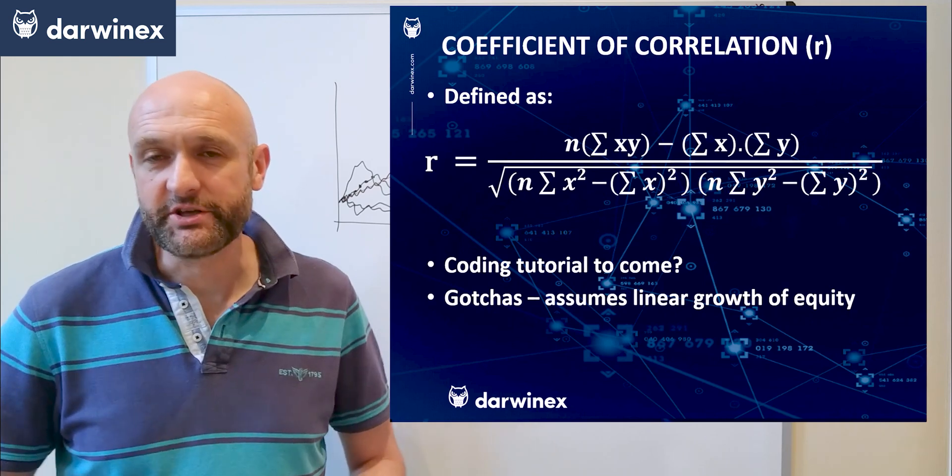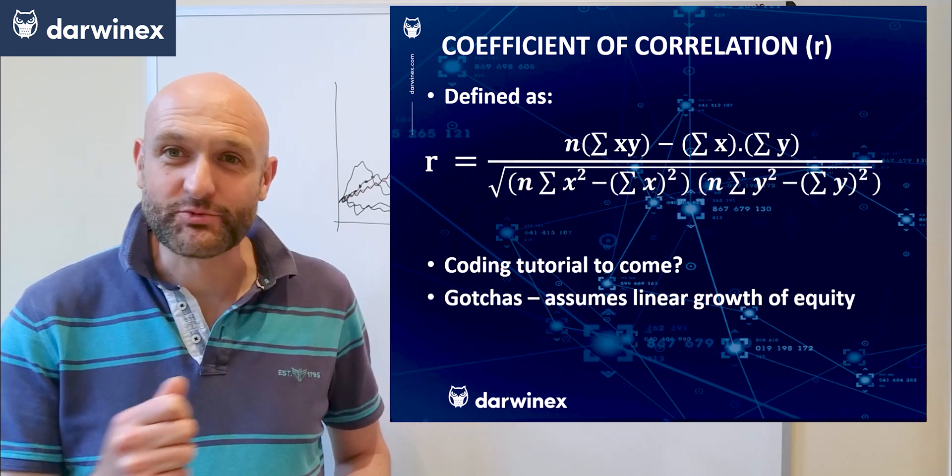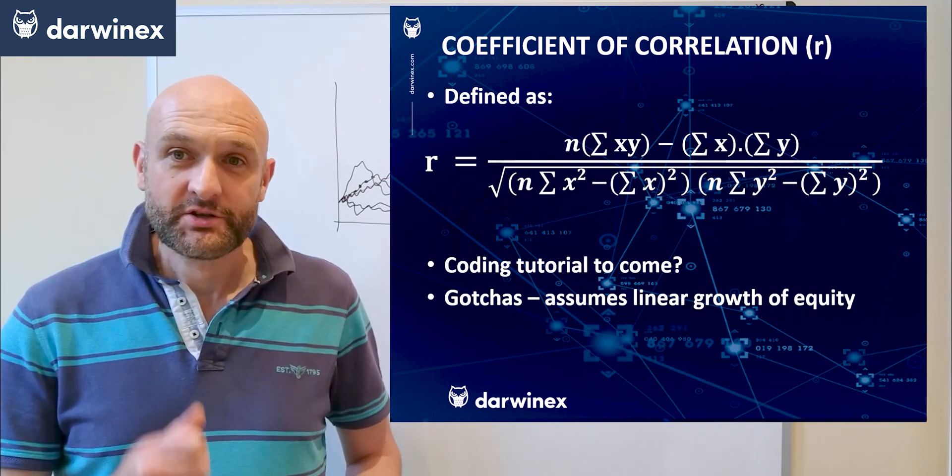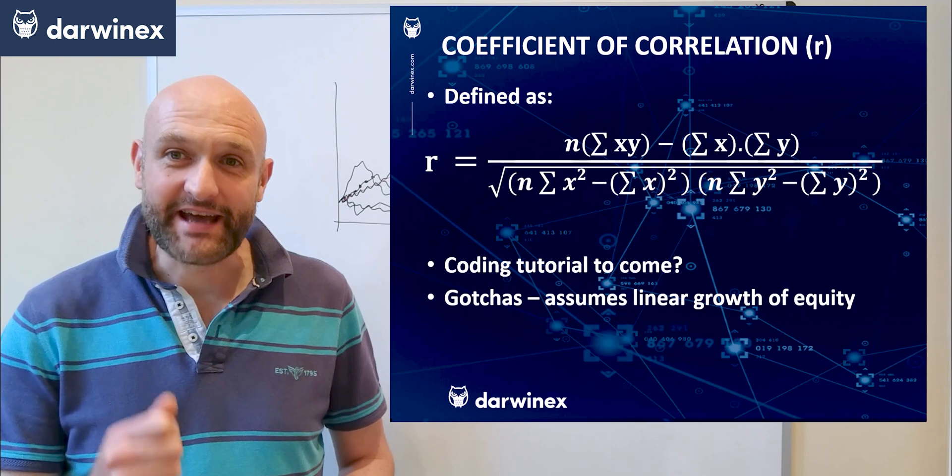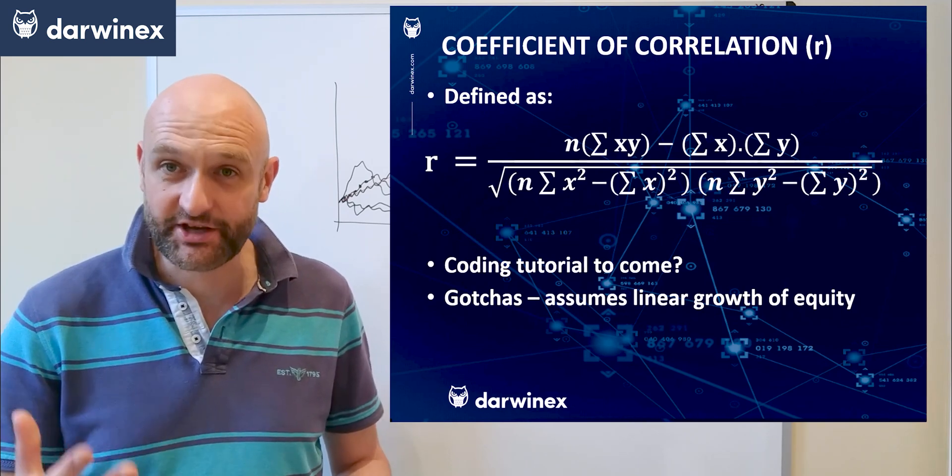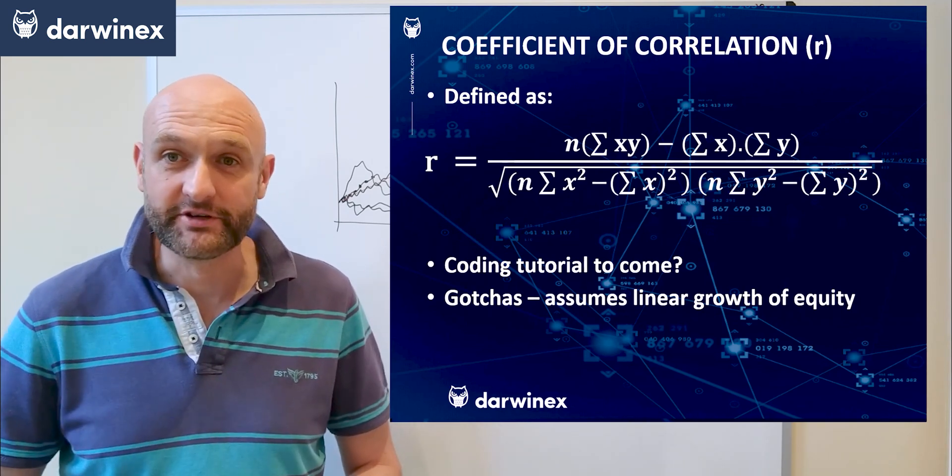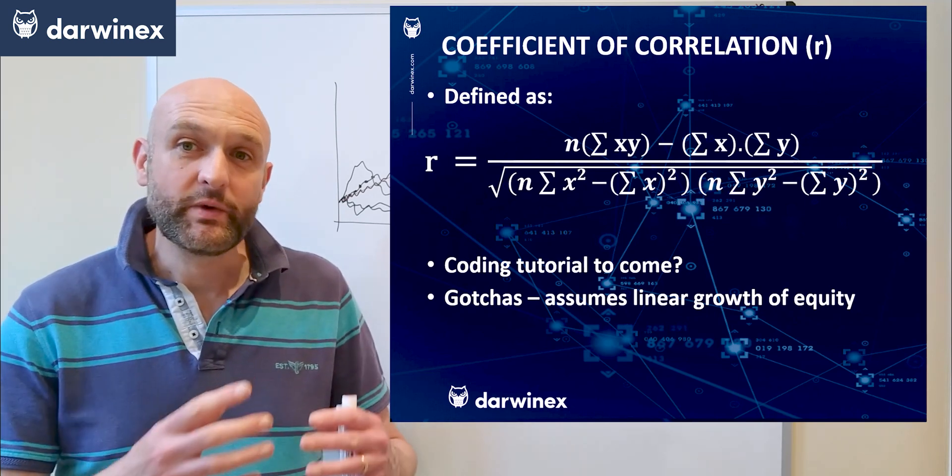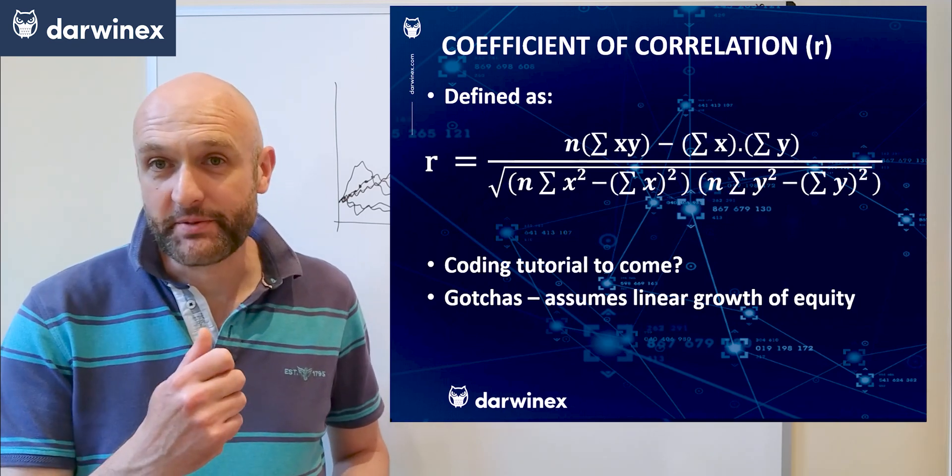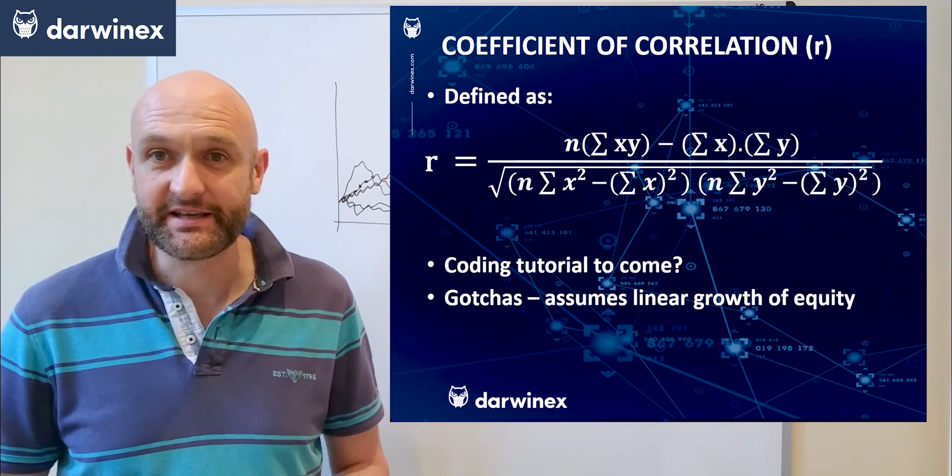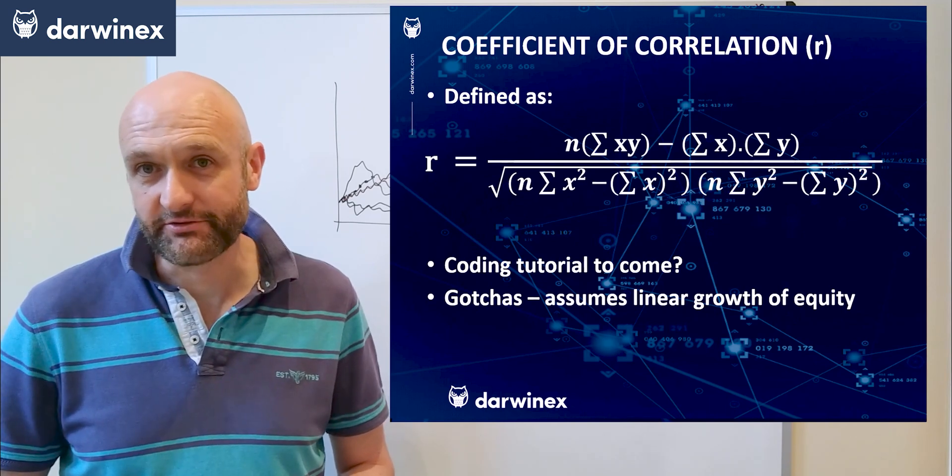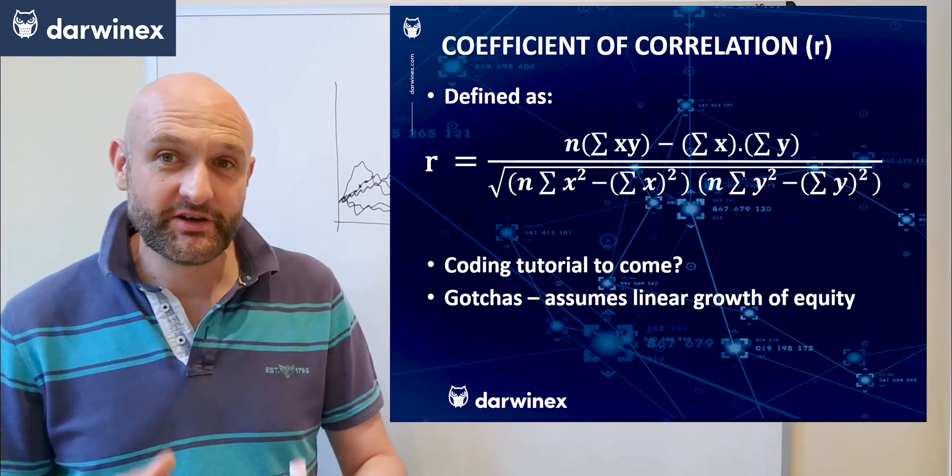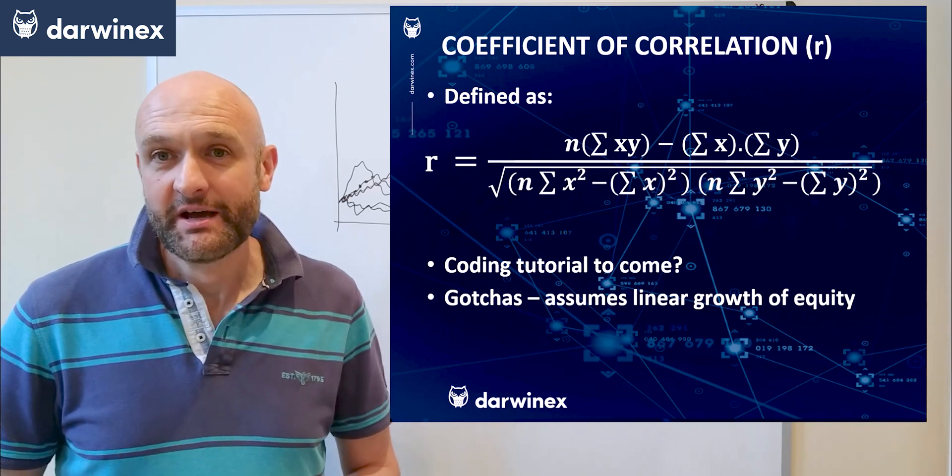There is a gotcha here that you need to be aware of, and it's the same as with profit factor and the drawdown-based metrics we looked at earlier on. Profit factor needed a fixed lot size to be accurate and give meaningful results. With the drawdown-based metrics it was the opposite—we needed a position size that scaled with the equity in the account to give us accurate numbers. With the coefficient of correlation we return to needing a fixed lot size.